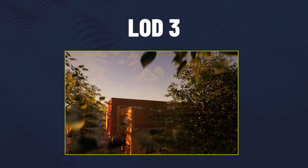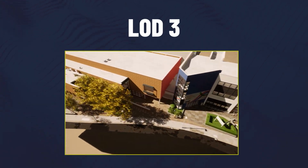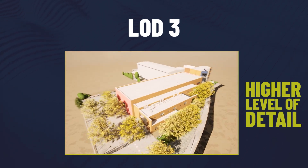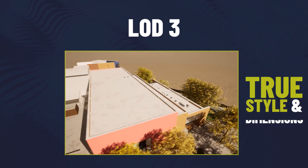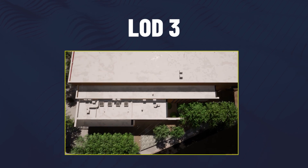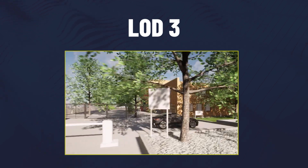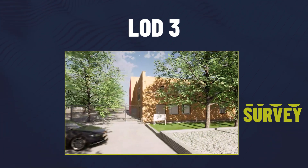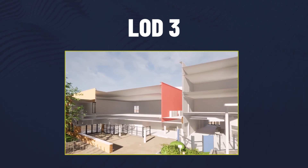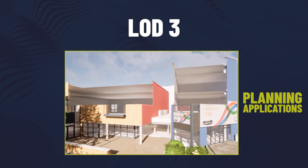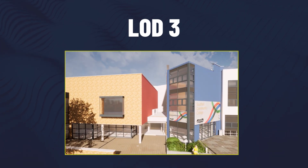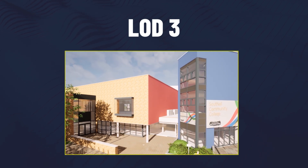LOD3 is the detailed elements. Moving up to LOD3, we have a higher level of detail — structural elements are more precise and windows and doors show true style and dimensions. This level also includes fixed furniture such as cupboards, countertops and shelving. Comparable to a 1 to 50 survey, LOD3 is often used for architectural design, construction documentation and more detailed planning applications. It strikes a nice balance between usability and detail, making it ideal for most project needs.